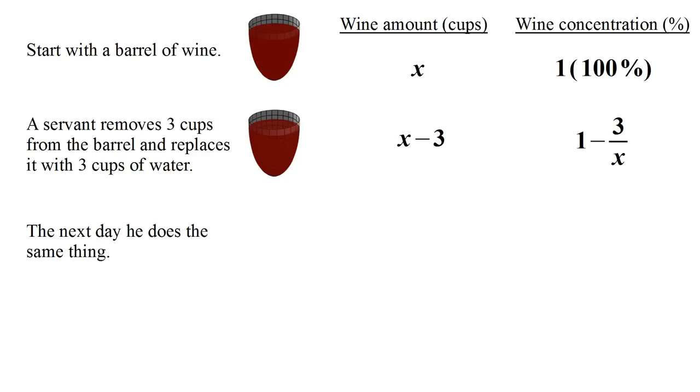The next day the servant does the same thing. So the wine in the barrel gets diluted even more. How much wine will be in the barrel? Well, we already have X minus three cups that are in there, and then he removes three cups of the diluted wine.